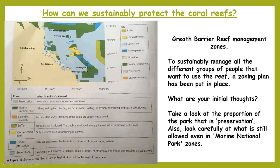It's not the best sustainability plan, but the Great Barrier Reef management zones aim to sustainably manage all the different groups that want to use the reef — fishermen, Aboriginal tribes, tourists. A zoning plan has been put in place. Take a look at the proportion that is preservation, and look at what is still allowed even in marine national park zones. Think about whether you believe this would actually be an effective way of sustainably managing the Great Barrier Reef.